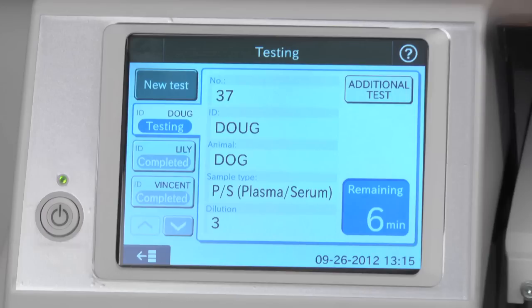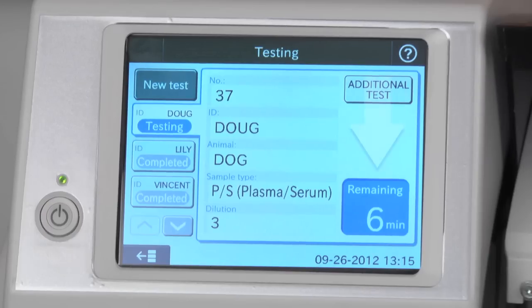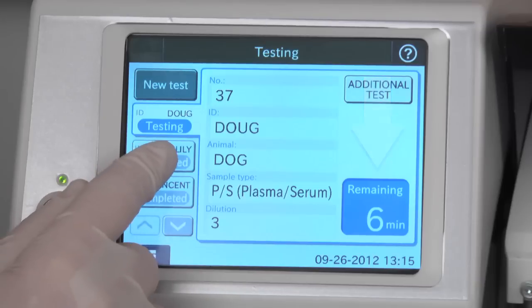The Element DC provides a countdown to displayed results for individual samples as well as an option to see the remaining time to completion for all tests in your queue.